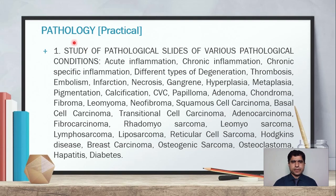Now we will see the pathology practicals. Number one is the study of pathological slides of various pathological conditions. Slides are already prepared and available, so you can examine them under the microscope — including acute inflammation slides, chronic inflammation, and chronic specific inflammation slides.